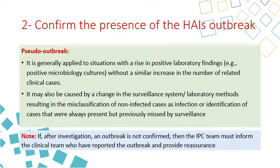A pseudo-outbreak applies to a situation with a rise in positive lab findings — for example, positive microbiology cultures — without a similar increase in the number of related clinical cases. This may be caused by a change in the surveillance system or lab methods, resulting in misclassification of non-infected cases as infected, or identification of cases that were always present but previously missed by surveillance. If after investigation an outbreak is not confirmed, the infection prevention and control team must inform the clinical team and provide reassurance.